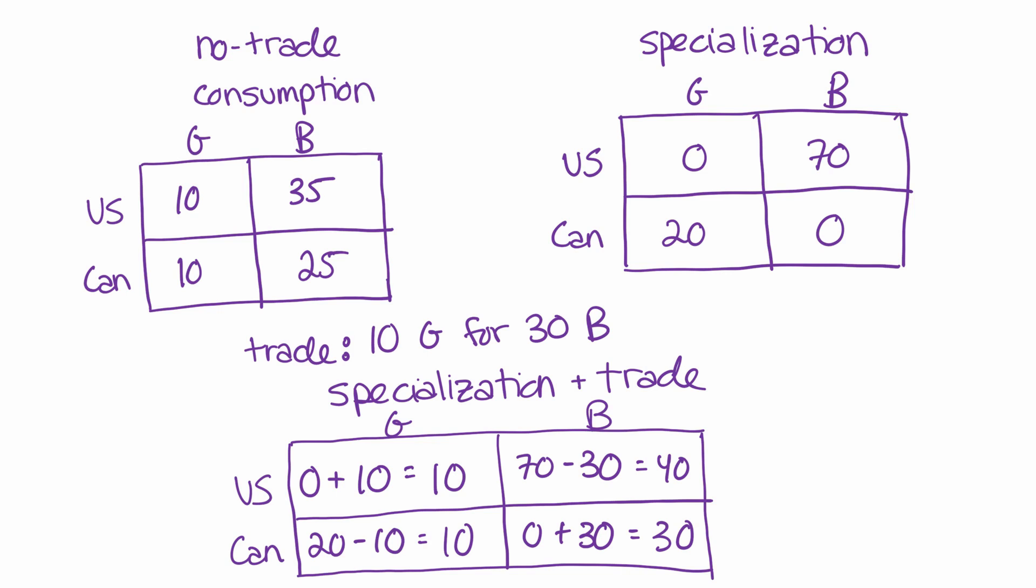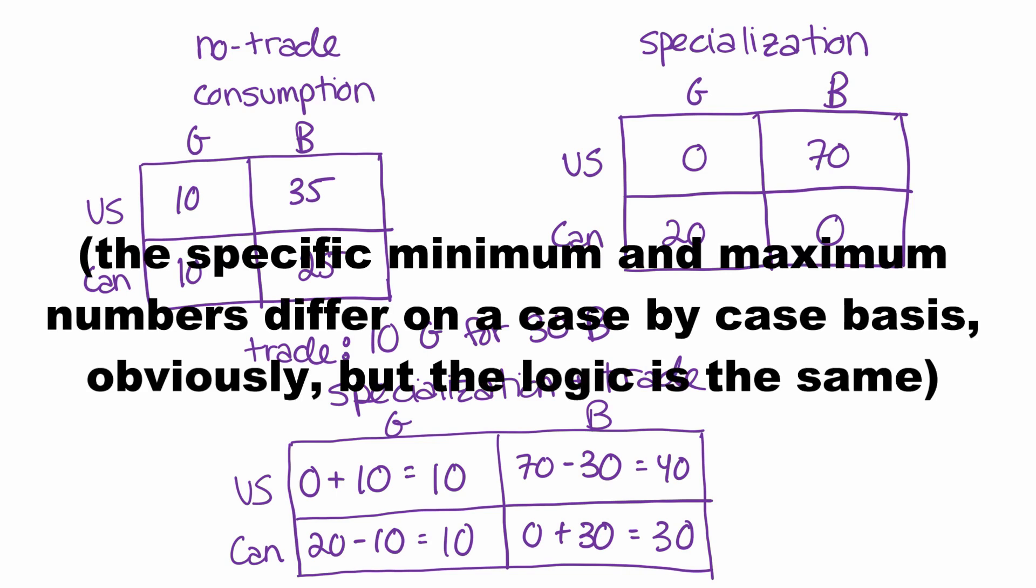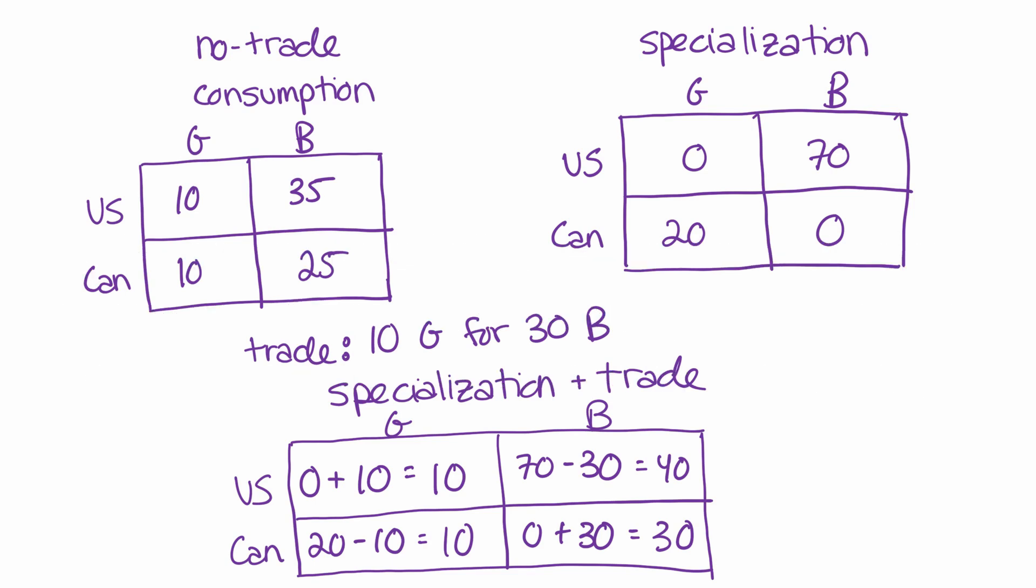You could even take this one step further and think about what sizes of trades would conceivably work. And you could notice that because the US and Canada were each consuming 10 guns before the trade, the trade has to be large enough so that they're both consuming 10 guns after the trade as well. So that's sort of the helpful rule of thumb that you can think about to consider whether a trade is large enough or small enough to actually make both parties better off.